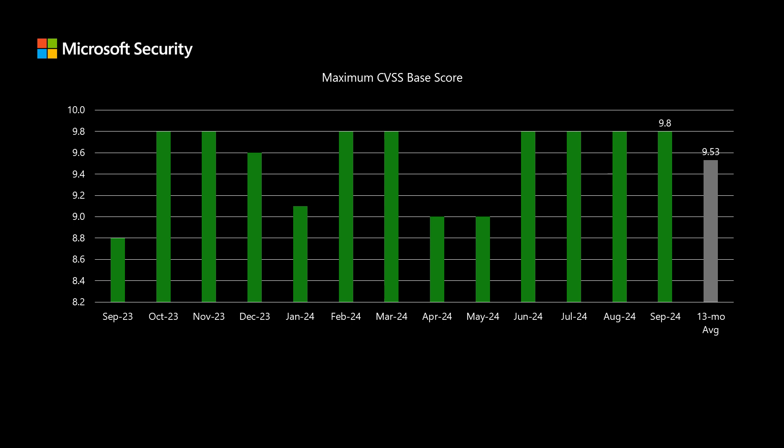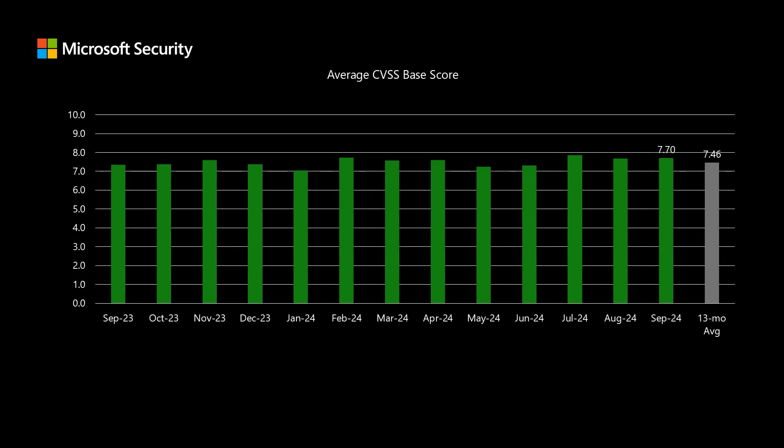We've been averaging right around 9.5 for that top score. When we look at the average score across the entire release, this month it comes in at 7.70. We've been averaging around 7.46 over the past 13 months — that is a little bit elevated. The CVSS score, as I mentioned, is just a starting point. It is a combination of eight separate vector strings: attack vector, attack complexity, privileges required, user interaction, scope, confidentiality, integrity, and availability. Depending on the value across those eight vector strings, we come out with that score.